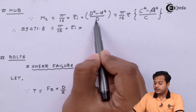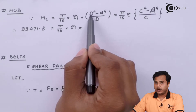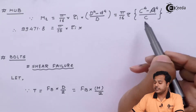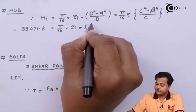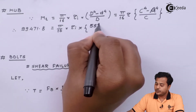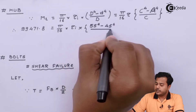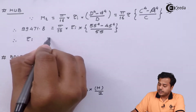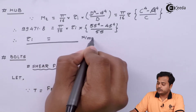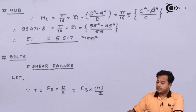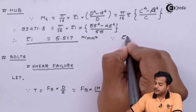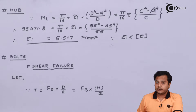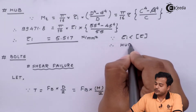The formula uses (outer diameter⁴ − inner diameter⁴) / outer diameter. Here, outer diameter is the hub diameter and inner diameter is the shaft diameter. Substituting: (55⁴ − 45⁴) / 55. Solving, τ_induced ≈ 5.517 N/mm². The allowable value is 25 N/mm², so the induced value is smaller than the allowable, and therefore the hub is also safe.